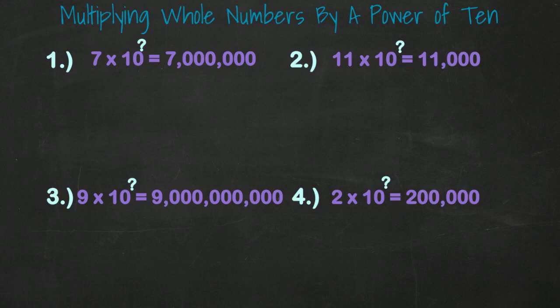First, we have 7 times 10 to what power equals 7 million. We have the number 7 and it's followed by 6 zeros. So according to the rule, it would be 10 to the 6th.